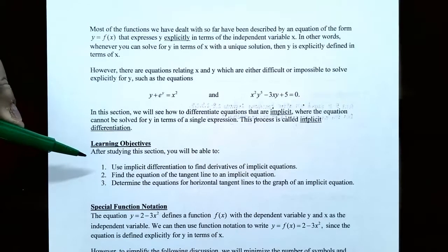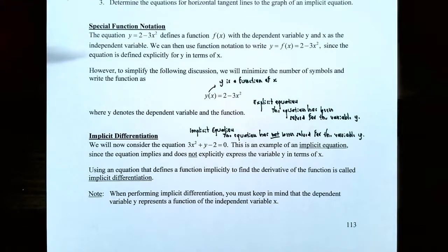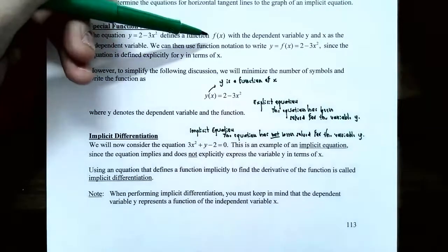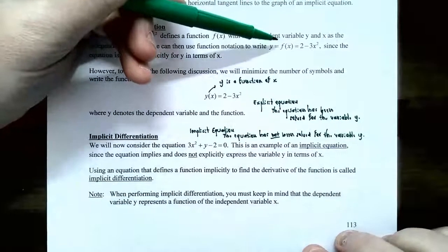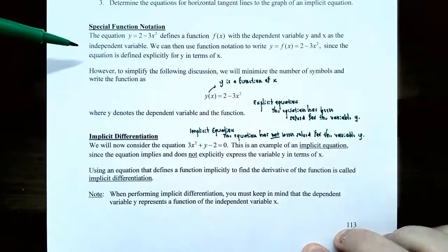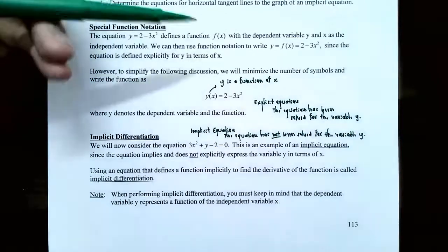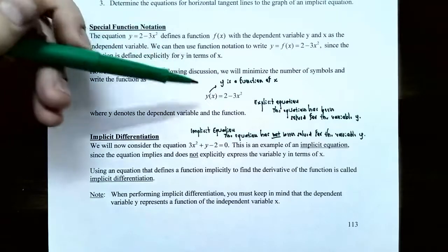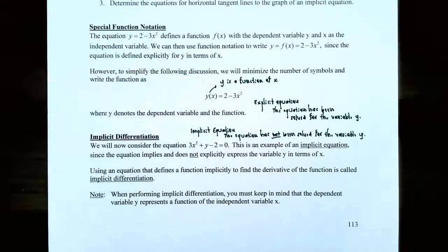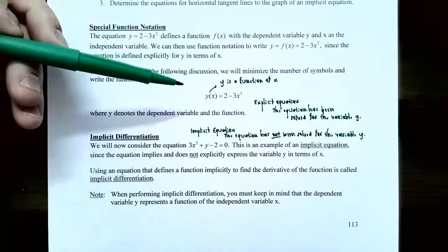In this video, we're going to talk about implicit differentiation to find derivatives of implicit equations. Let's start with a discussion of what's called special function notation. The equation y equals 2 subtract 3x squared defines a function of x. We always replace the y with function notation f of x, so you could rewrite this as f of x equals 2 subtract 3x squared. To minimize the number of symbols, we're going to write this as y of x equals 2 subtract 3x squared in this section.